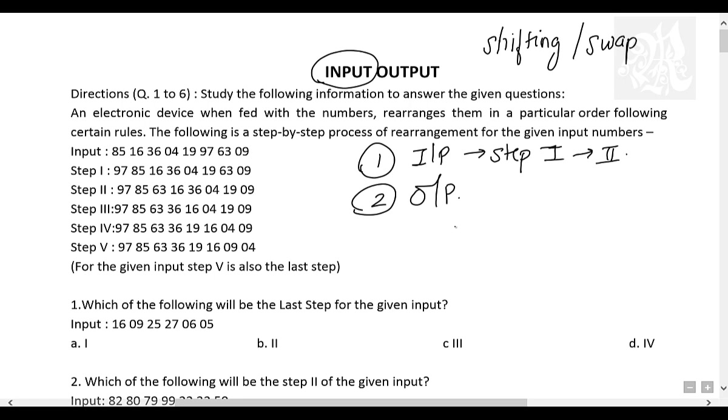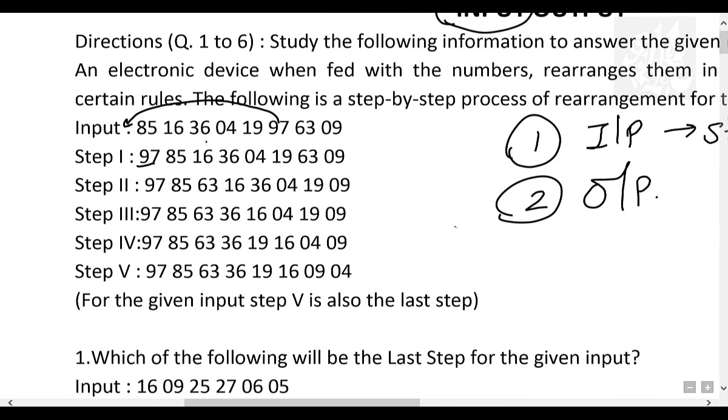See input is what? 85, 16, 36, 04, 19, 97, 63, 09. What happens in the first step? 97 has come ahead. Where did it come from? It came from here and it came here ahead. What happened to the others? They got shifted behind by 1 step. All of them are getting shifted by 1 step. So they all got pushed away by 97. So 97 came ahead.